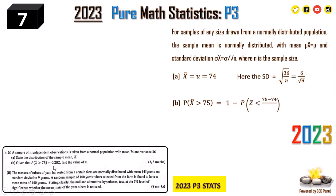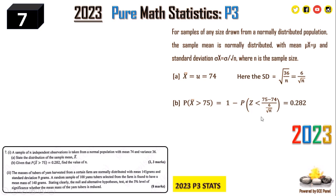Part (b): Given that P(X̄ > 75) = 0.282, find the value of n. Since it's a normal distribution, P(X̄ > 75) = 0.282 can be written as 1 minus P(X̄ ≤ 75). Converting from X to Z, this becomes 1 minus P(Z < (75 − 74) / (6 / root n)), which equals 0.282. Here 74 is the mean mu and 6 over root n is the standard deviation of the sample mean.